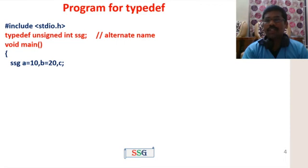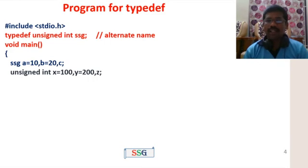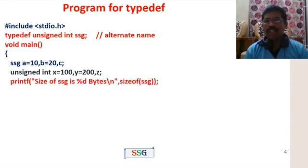void main: declare ssg a equal to 10, b equal to 10. Using ssg, the name replaces unsigned int, so you no longer need to write unsigned int explicitly. Declare alternate name y equal to 100. Print size of ssg - the size of ssg is 2 bytes.